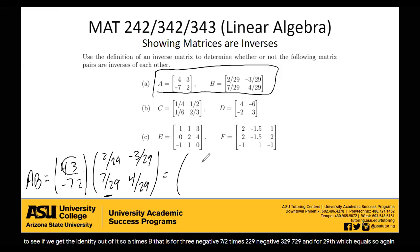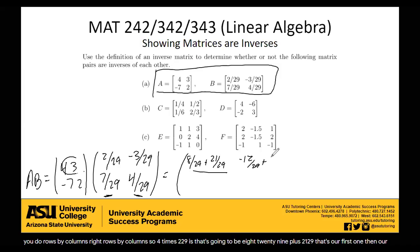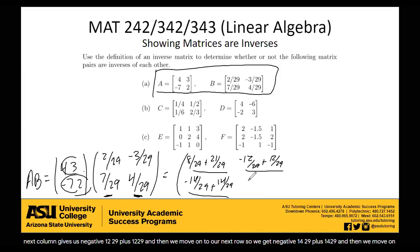4 times 2 29ths is 8 29ths, plus 21 29ths. That's our first one. Then our next column gives us negative 12 29ths plus 12 29ths. And then we move on to our next row. We get negative 14 29ths plus 14 29ths. And then we move on to our last column, gives us 21 29ths plus 8 29ths.